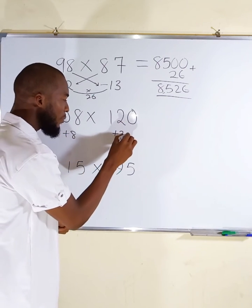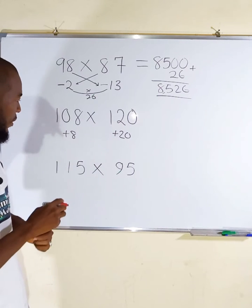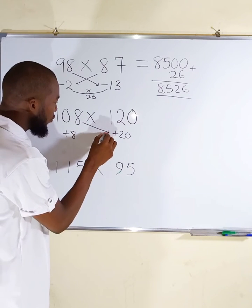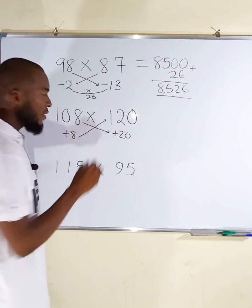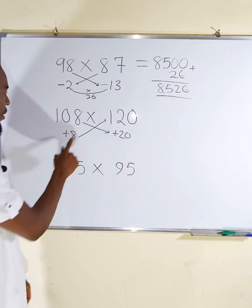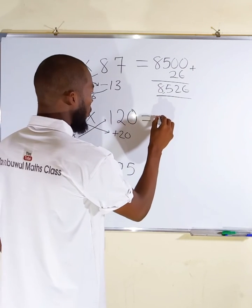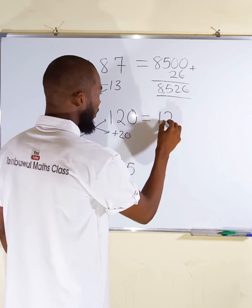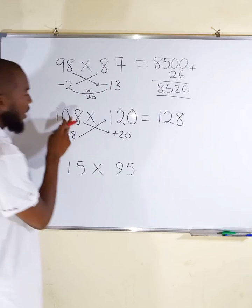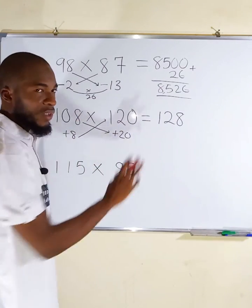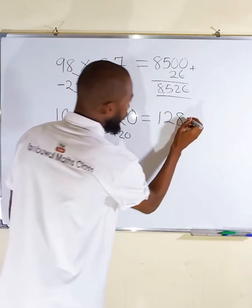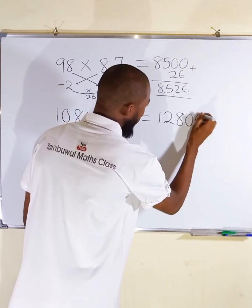By adding these two numbers you get the same value. 120 plus 8 will give us 128, likewise 108 plus 20 would give us the same. Remember we are dealing with 100, so add two extra zeros here.